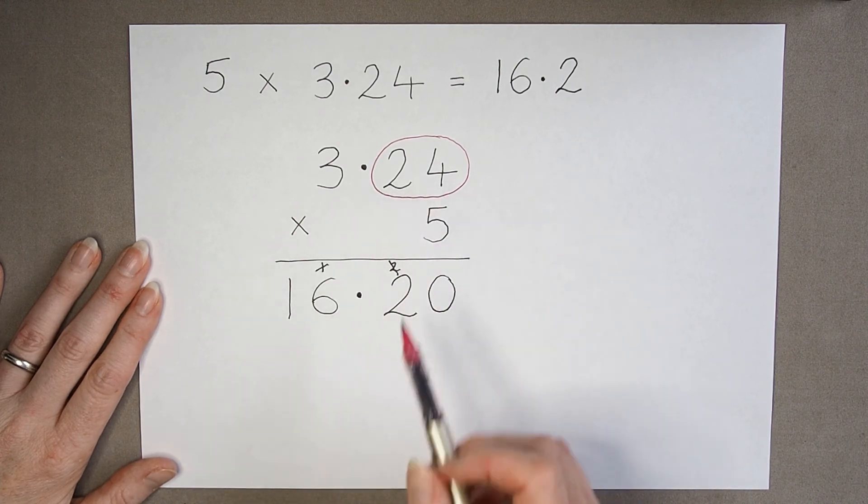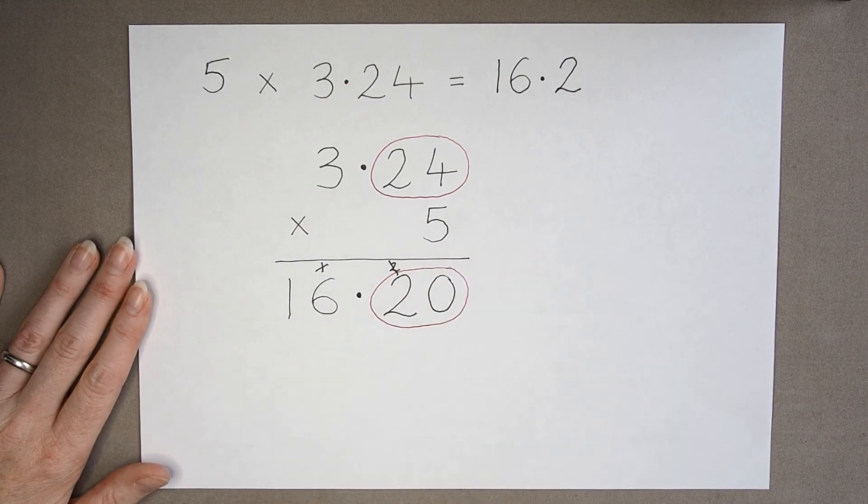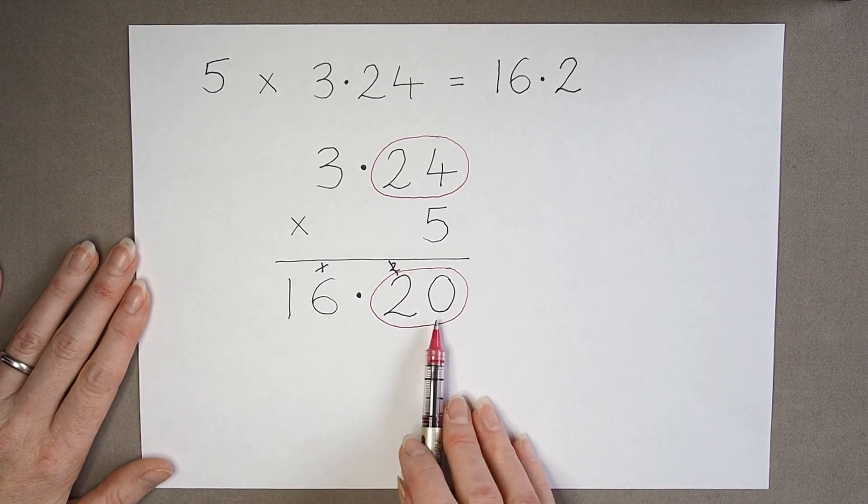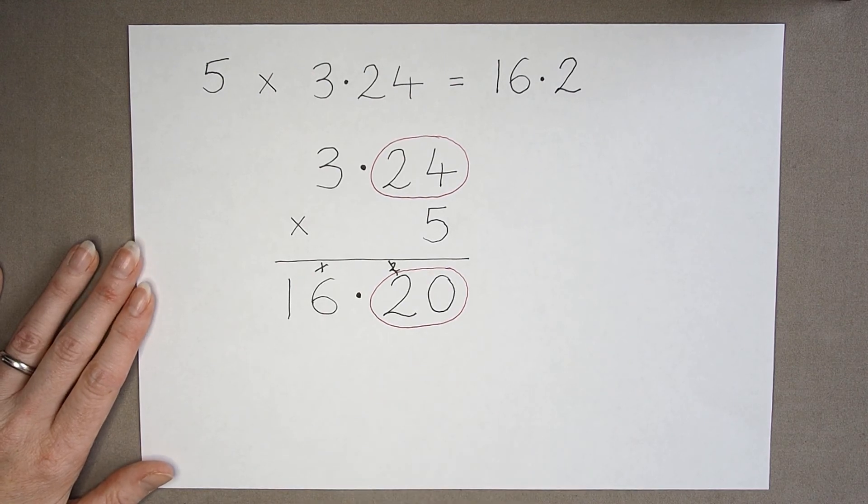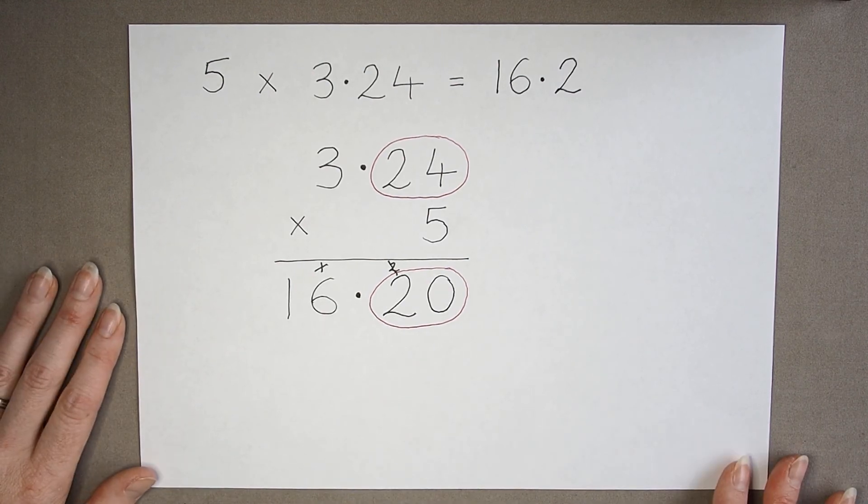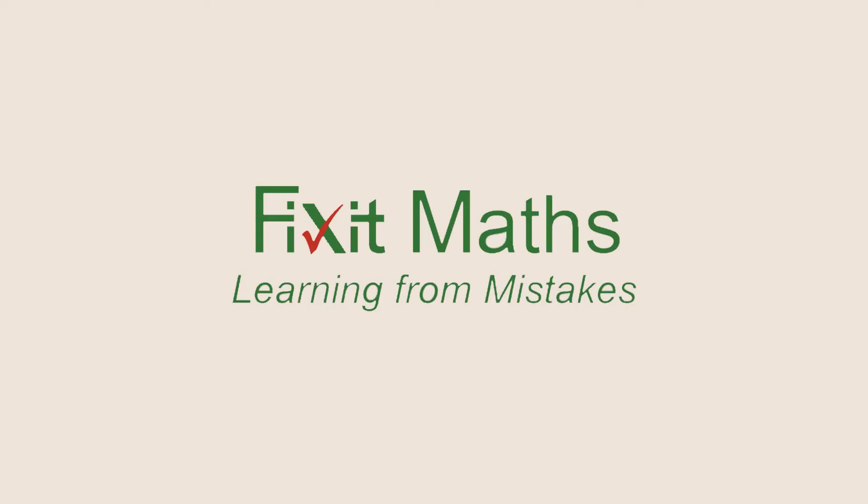But we can see when we've worked this out that we've got two digits here after our decimal point. We've got tenths and hundredths. And in our calculating the answer, we've also got two digits here after our decimal point. And that's going to be important to remember when we come onto long multiplication with decimals.